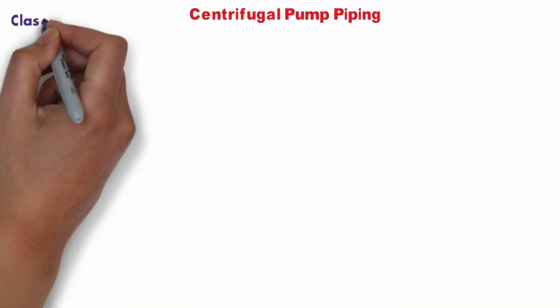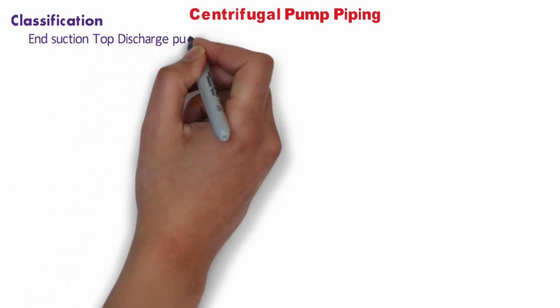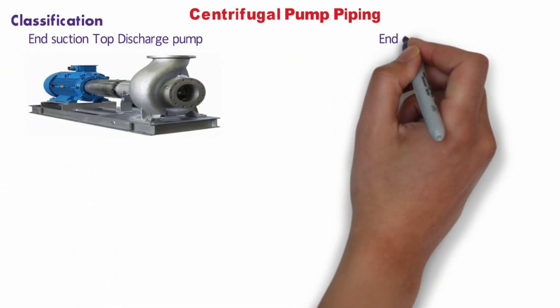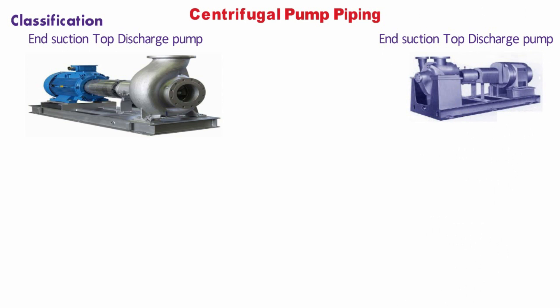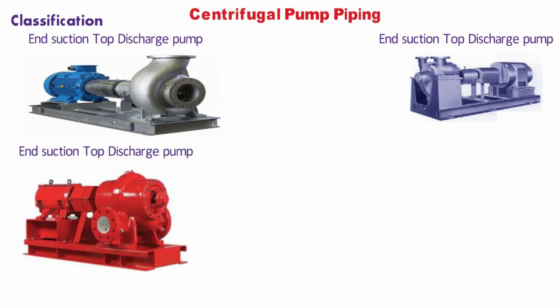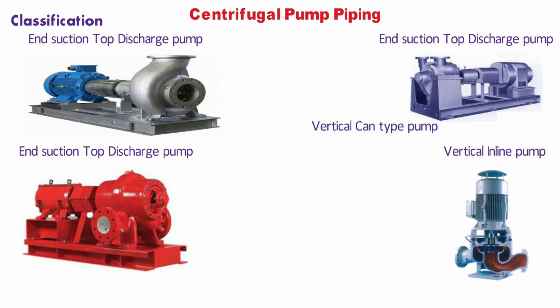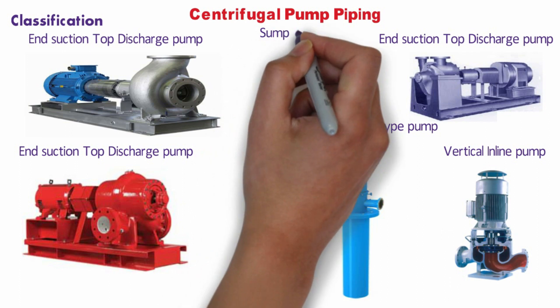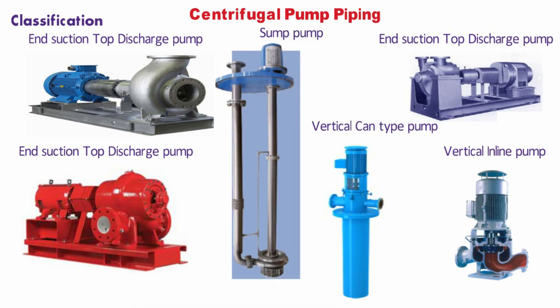There are different types of centrifugal pumps based on suction and discharge nozzle location, such as end suction and top discharge, top suction top discharge, side suction side discharge, sump pumps, vertical inline pumps, and vertical can-type pumps. The piping for all of these pumps will be covered in a later stage of the video.